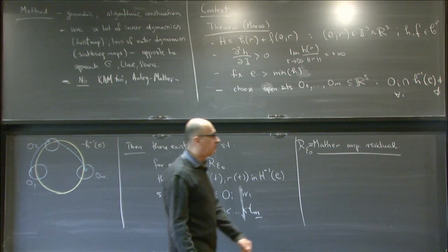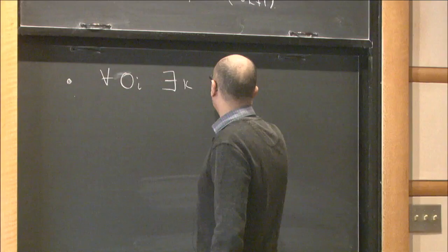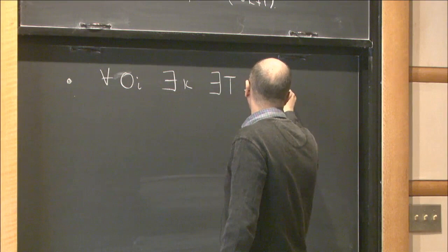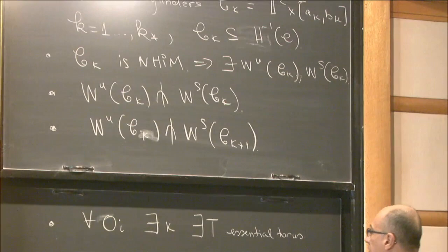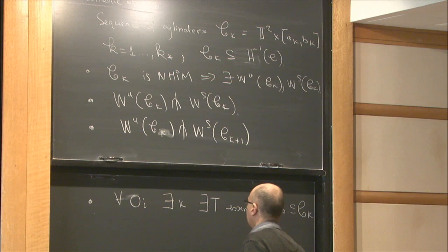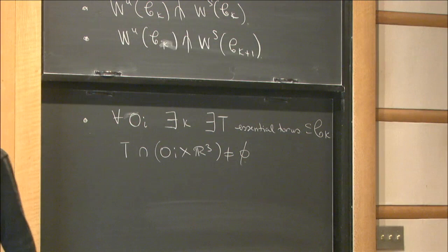The objective is to visit each of the open sets. When you construct this chain of cylinders, you do so with the property that for each open set O_i, there exists some K and a cylinder C_{K,i}, and there exists an essential torus — a two-dimensional torus contained in the three-dimensional cylinder — such that T intersects O_i non-emptily.